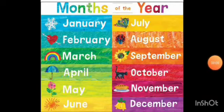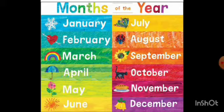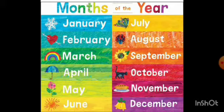Next, months of the year. Students, everyone knows there are 12 months in a year. First month: January, February, March, April, May, June, July, August, September, October, November, and December.